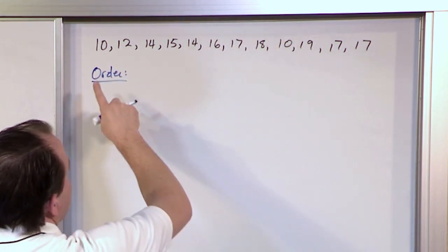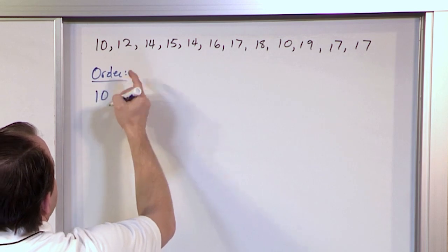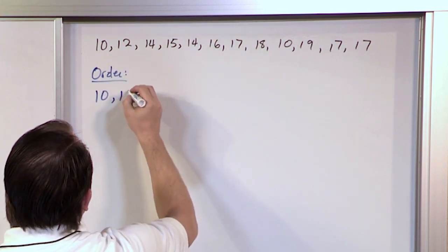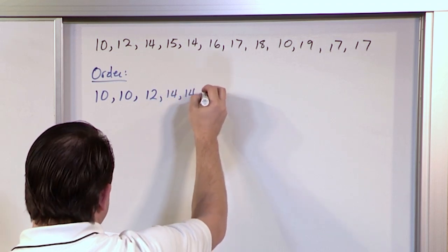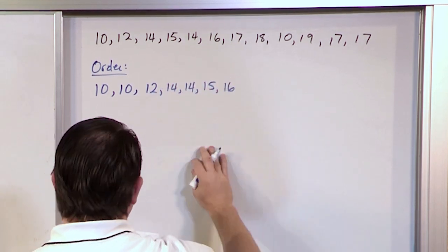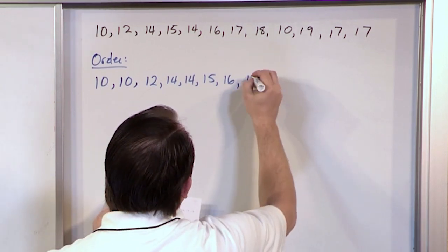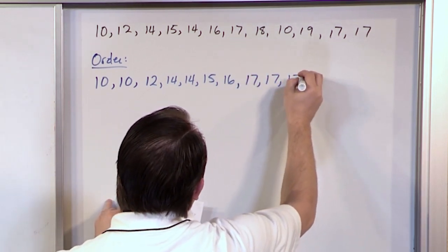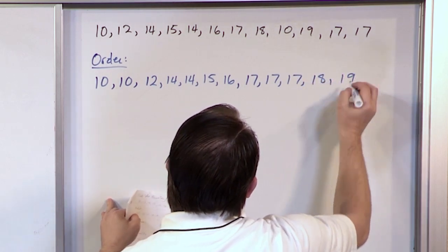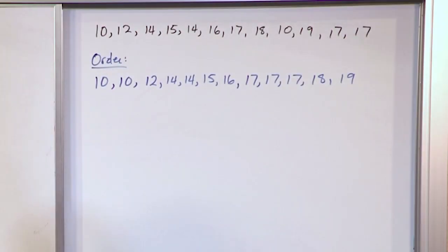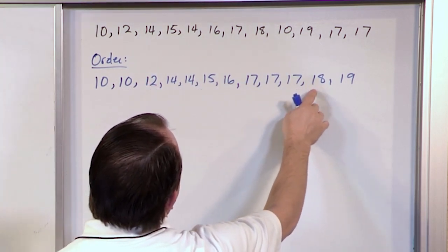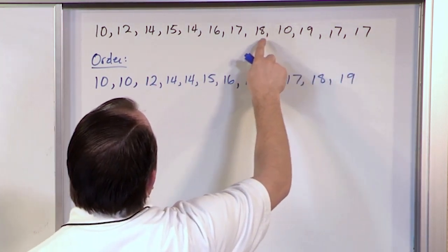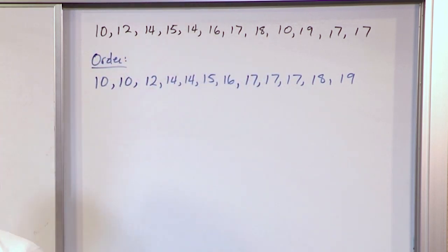The lowest value is 10 and I have two 10s. So: 10, 10, 12, 14, 14, 15, 16, then three 17s, then 18, and then 19. That's 12 values total, and I think I've done my ordering correctly.